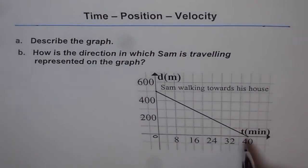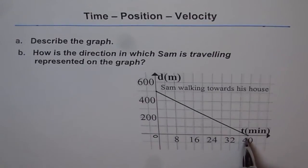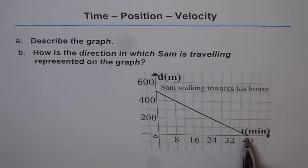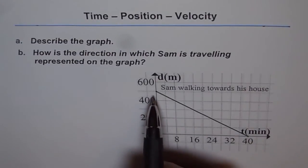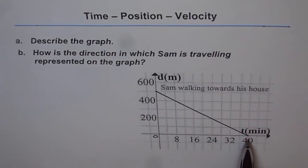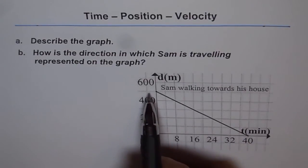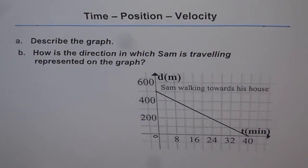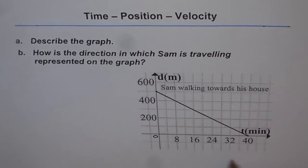At the end of the line, when time is 40 minutes, the distance of Sam from the house is 0. It means Sam has reached the house. So this story could start with that Sam starts walking towards the house, he is at present 500 meters away, and takes 40 minutes to reach the house. So that you could read from the graph itself.